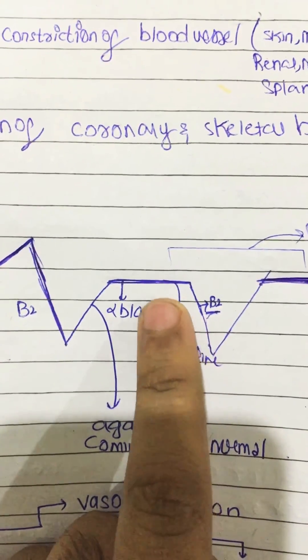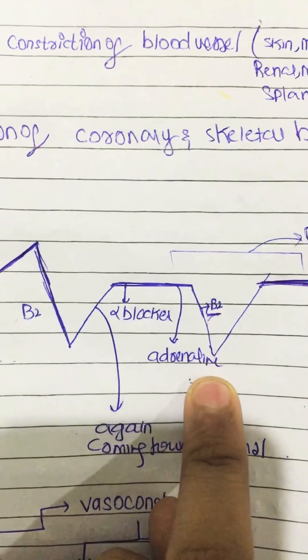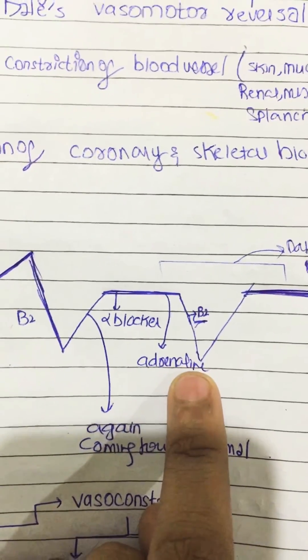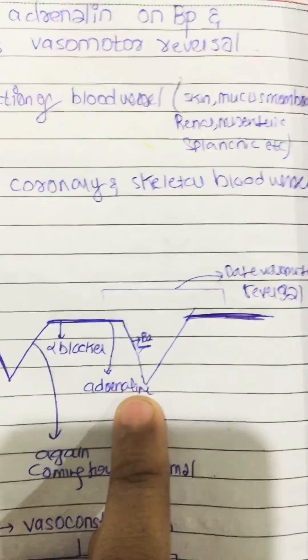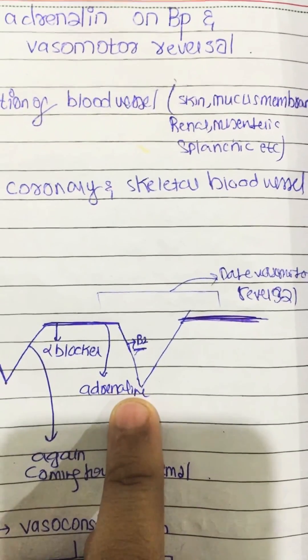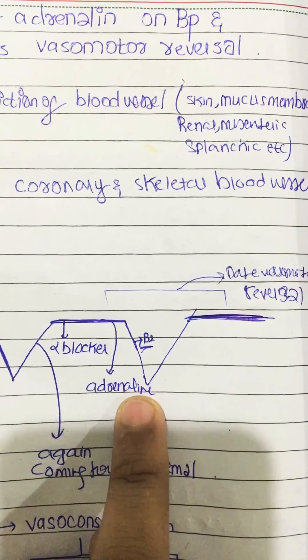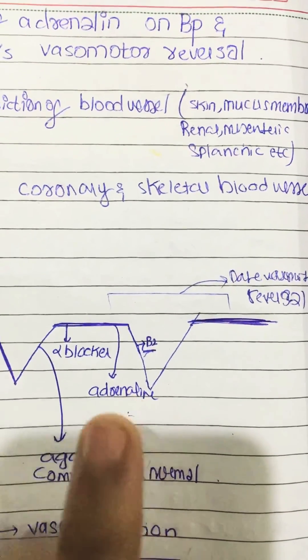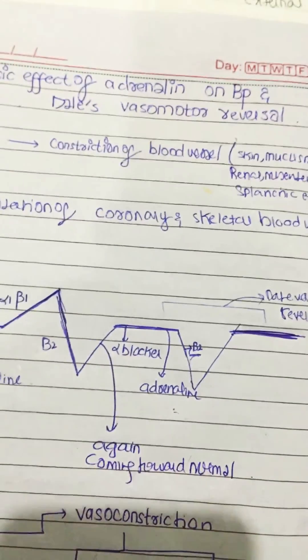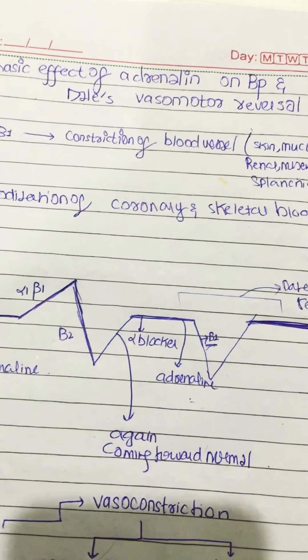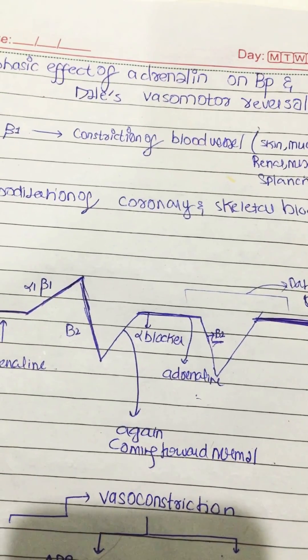Because only beta-2 receptors are activated, there is vasodilation and the blood pressure goes down. This is called the vasomotor reversal of Dale.